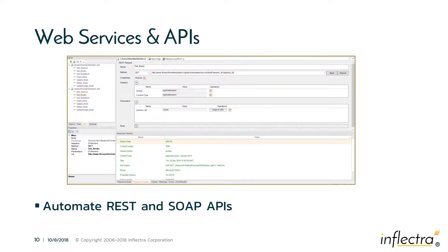An important feature set in RAPEES is the ability to do web services. It can call web services — both SOAP and REST — either as a standalone test or, more commonly, as part of an integrated test. For example, it can read data from a spreadsheet, load it into a UI, and then read it back from a web service API, or read data from a spreadsheet and load it directly into an API.